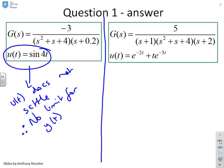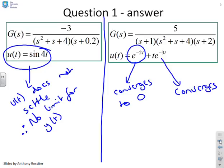What about the second one? Well, you look here and this converges to 0, and then you look at this signal, t*e^(-3t), also converges to 0. Therefore, the limit as t goes to infinity of y(t) equals 0. By the way, I've taken it for granted that the G(s) have stable dynamics, which you can see for yourself if you check the pole positions.